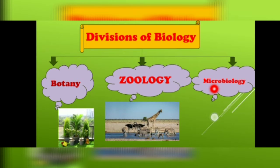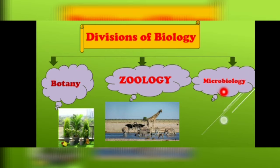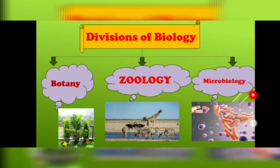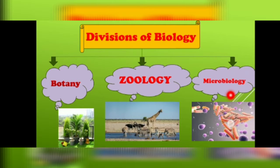The third division of biology is microbiology. 'Micro' means small, so microbiology is the study of microorganisms — those organisms that cannot be seen by the naked eye. For example, the study of viruses, bacteria, and fungi. When we study about these microorganisms, it will be included in microbiology.